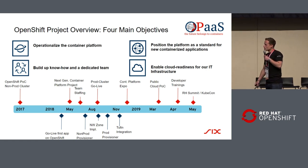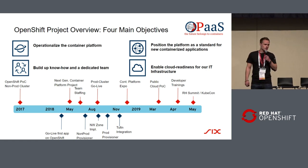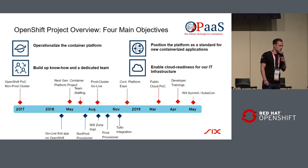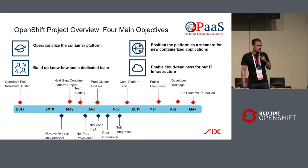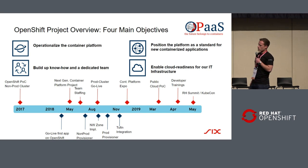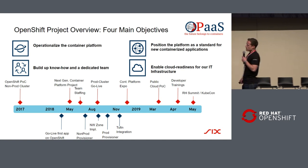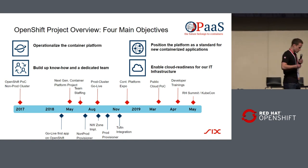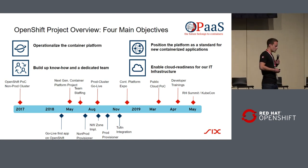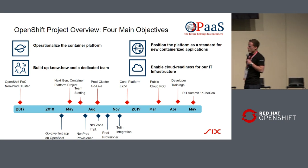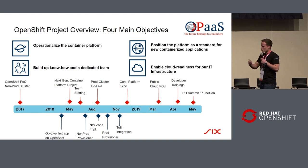Then in 2018, I joined the company. Mark, our software engineer — we also have a talk about the operator later on — also joined the team. Then we had the first Go Live app on OpenShift after January. The next thing was we had to really improve and extend the cluster inside Six. OpenShift is a really great product, but we have to extend it to get it into our environment.